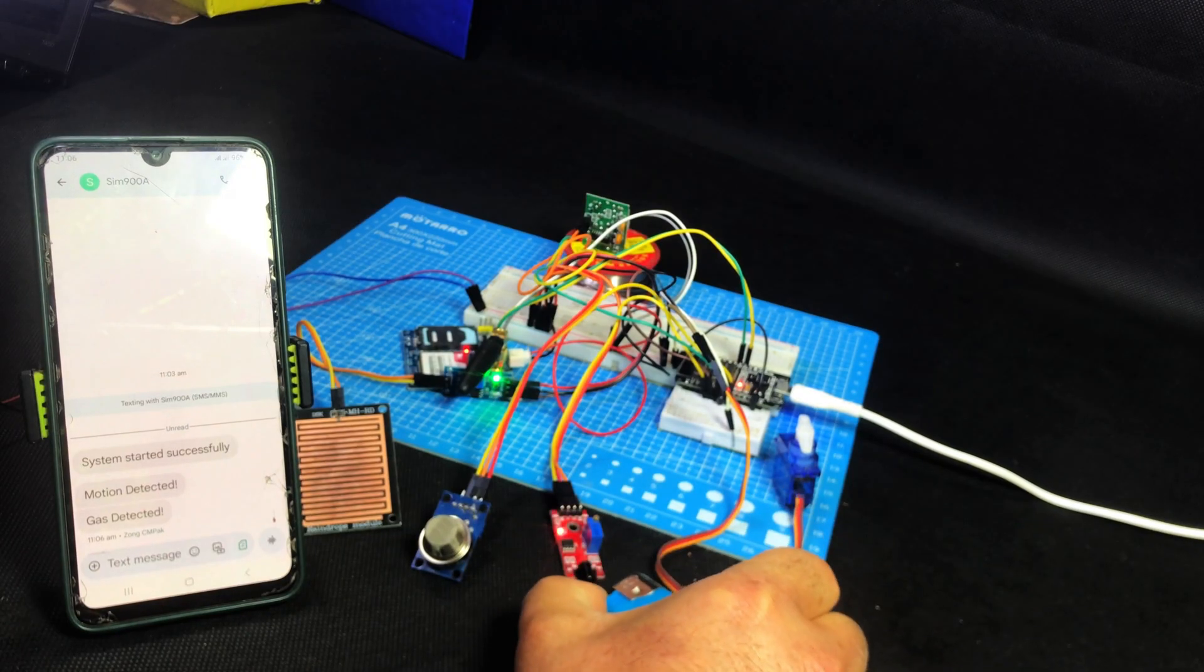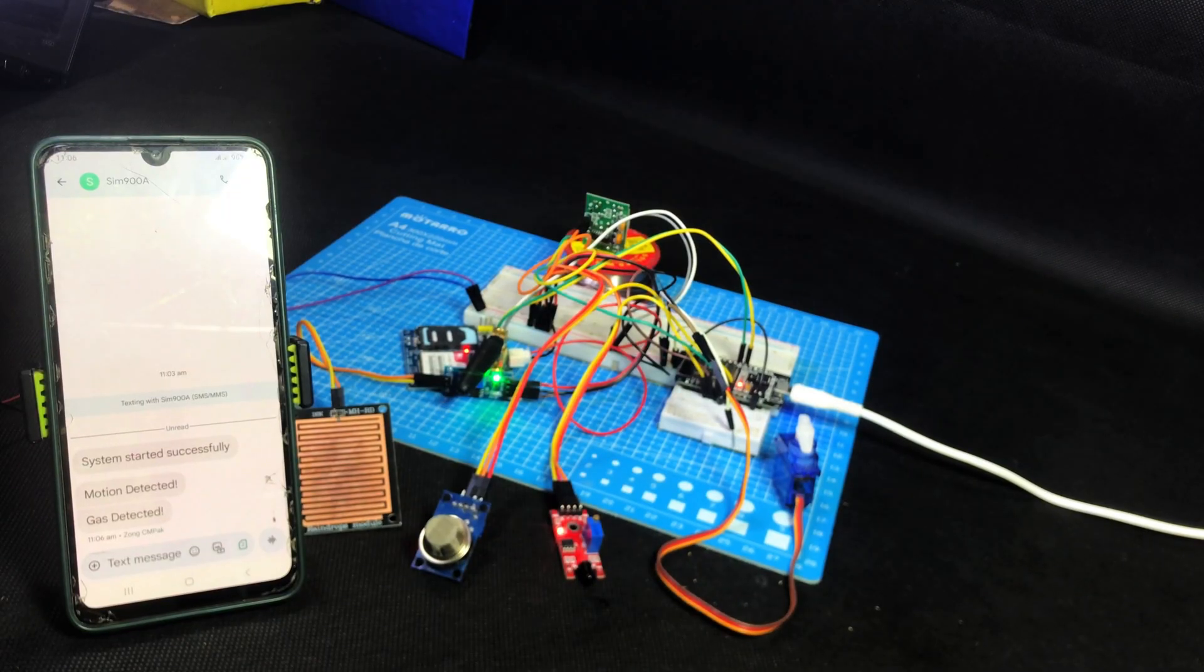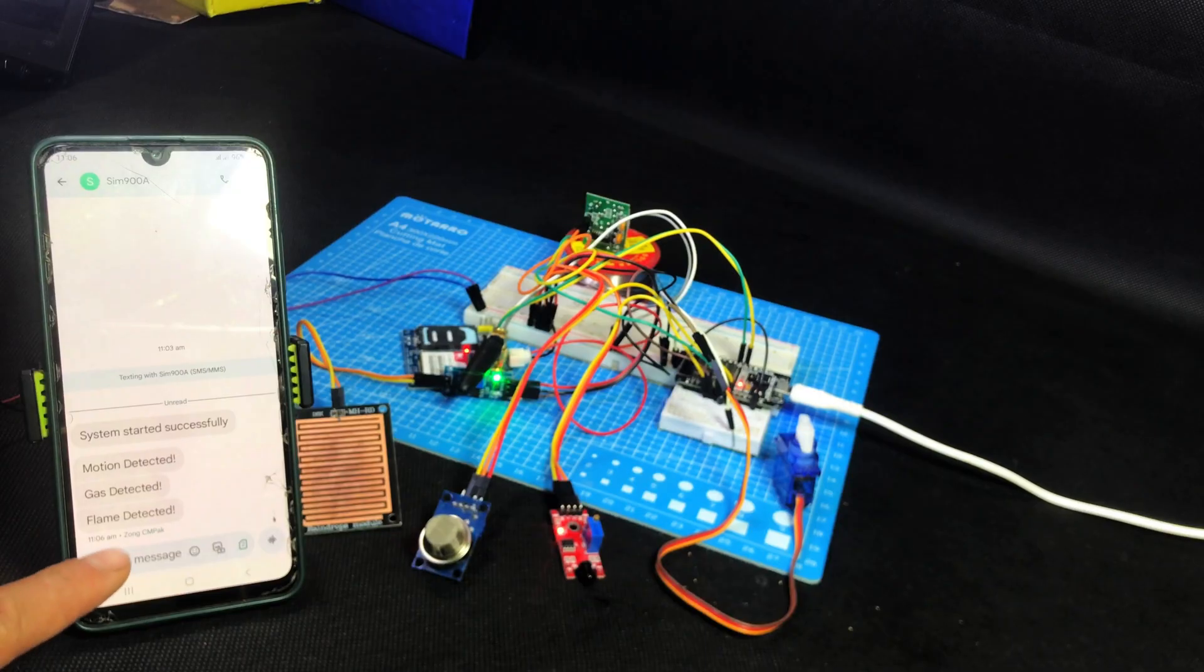Flame sensor test. Then I bring a small flame close to the flame sensor and my phone shows fire detected. So friends, all the sensors are working perfectly and the best part is the SMS alerts are working.